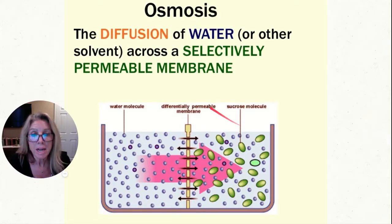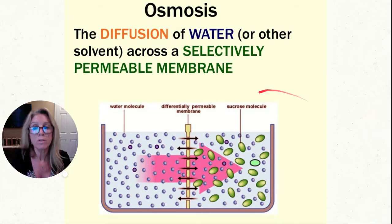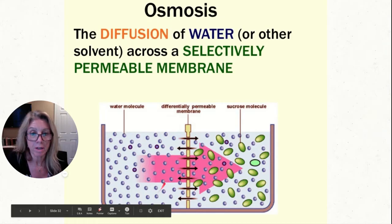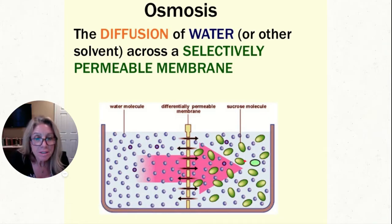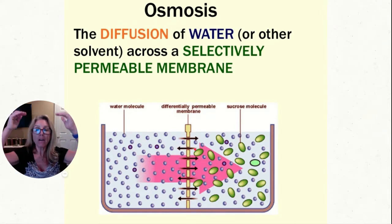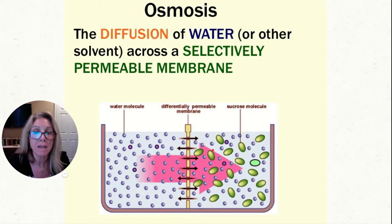The sugar molecules want to go from higher to lower concentration, but they can't fit through the holes in the membrane — they cannot cross. But the water molecules are small enough, so they can. The water will move from the left side to the right side. Whenever you have solutions separated by a membrane, you always describe one in reference to the other.